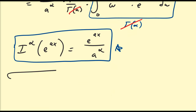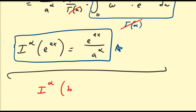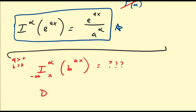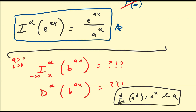I leave as an exercise to see if you can extend this on your own. Consider the alpha integral of b^(ax), assuming a and b are both positive numbers — the general exponential function. What do you think that may be equal to? And what do you think the fractional derivative of this general exponential would be equal to? Remember, we're trying to extend the relationship: the derivative of a^x equals a^x times ln(a), to any order alpha.